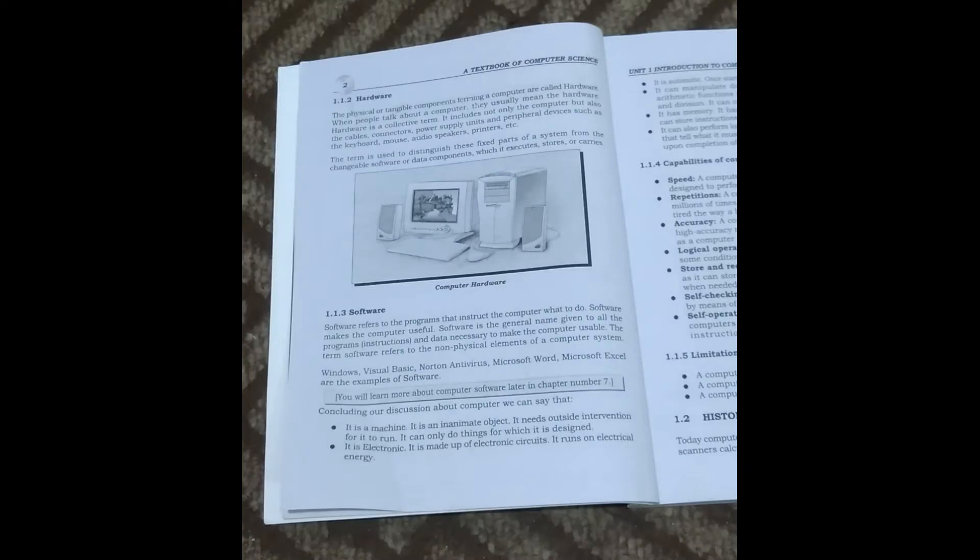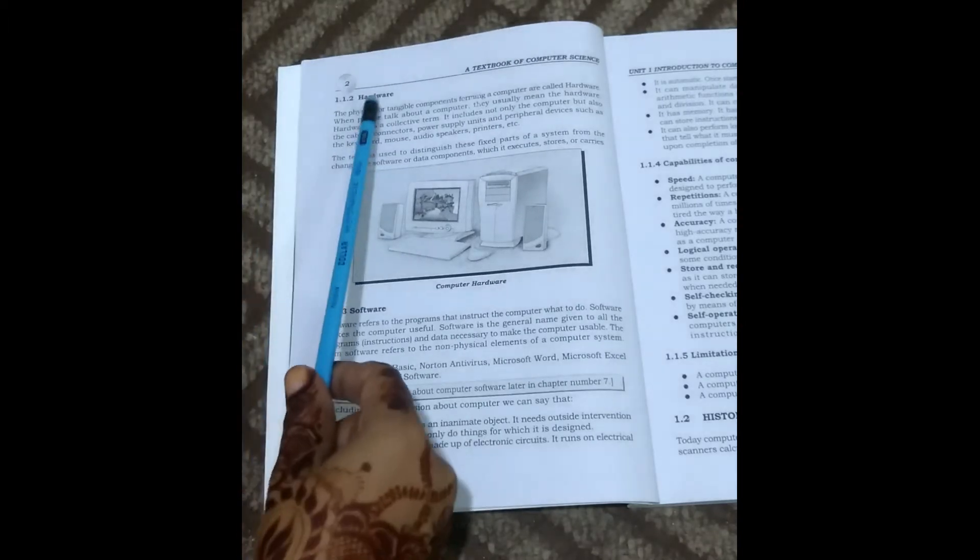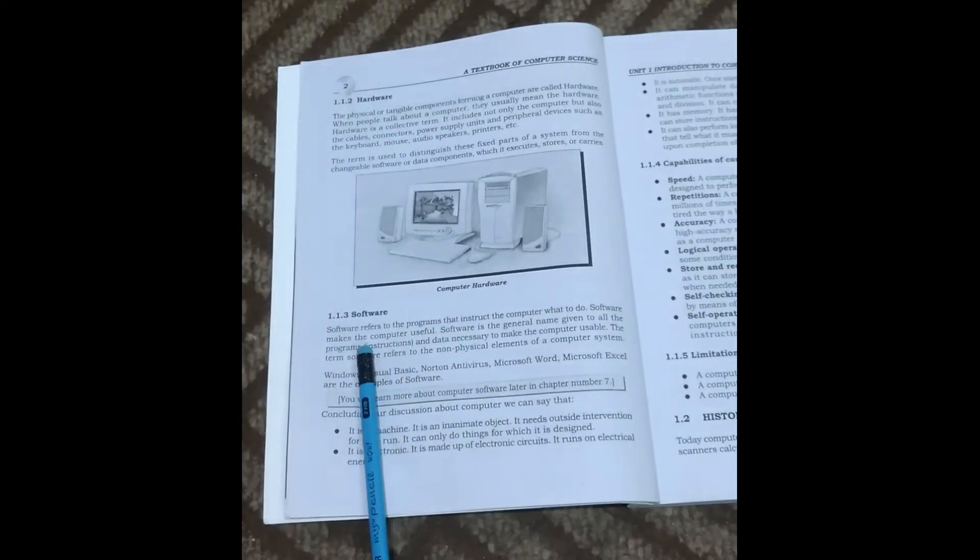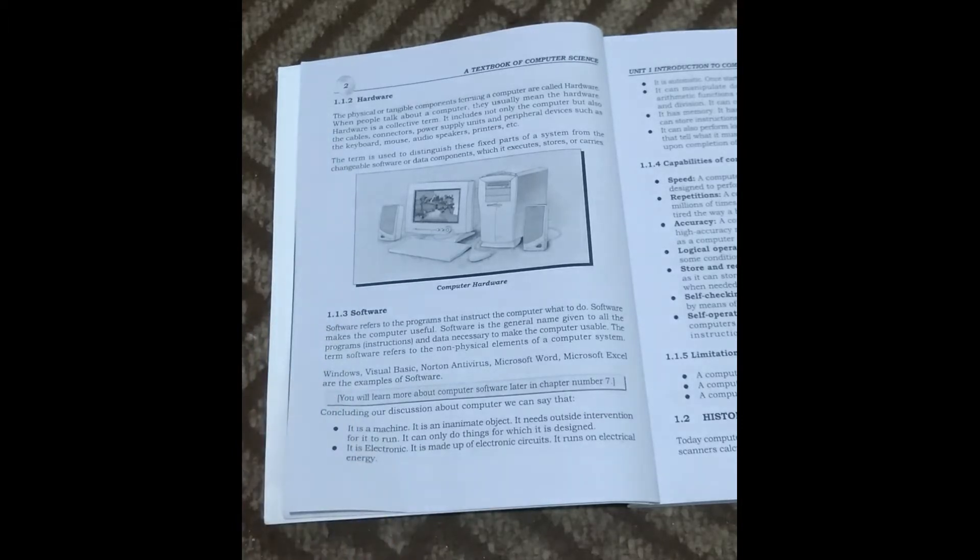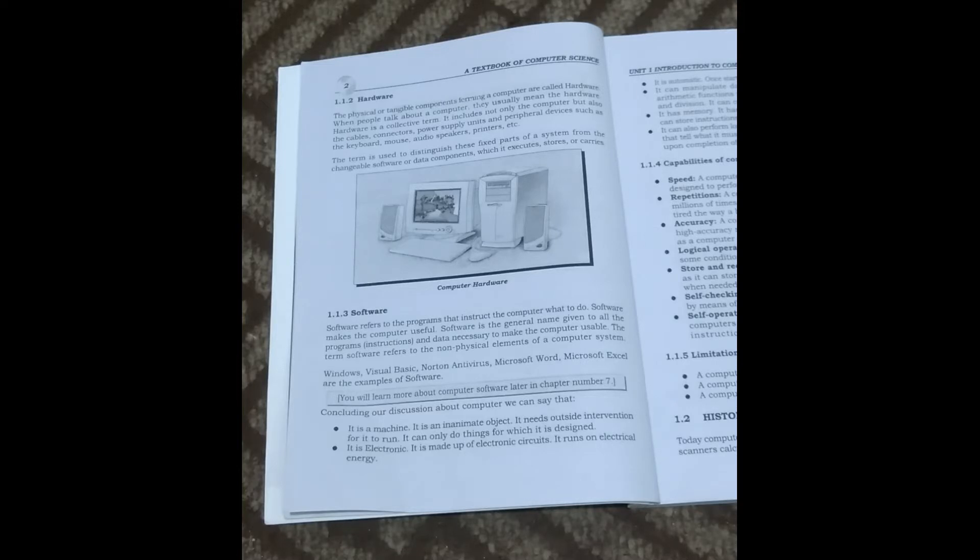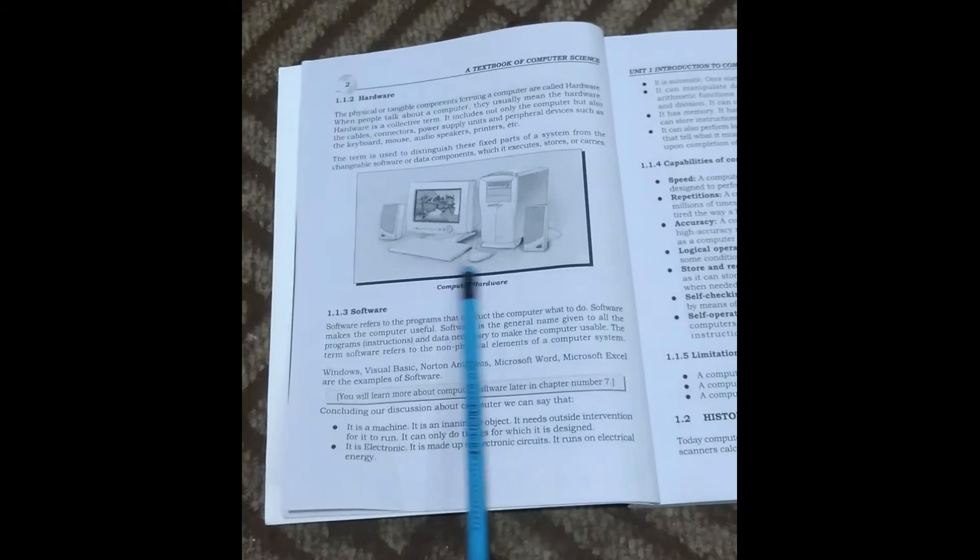Now we read about hardware and software on page number two. What is hardware? All physical parts we can touch or see are called hardware, like mouse, monitor, CPU, speaker, camera, keyboard - physical parts we can touch or see.